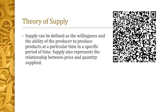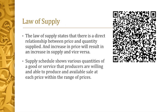Now we have the theory of supply. Supply can be defined as the willingness and ability of the producer to produce products at a particular time in a specific period. Supply also represents the relationship between price and quantity supplied. While demand is the ability and desire to buy a specific product, supply on the other hand is the willingness and ability of the producer to sell and produce. The law of supply states that there is a direct relationship — unlike demand which has an inverse relationship — meaning price and supply are parallel to each other.